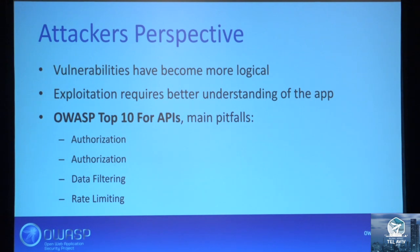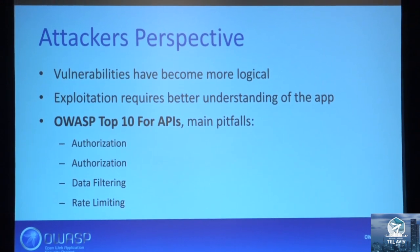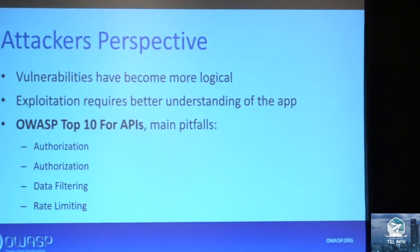All of these changes require a new mindset. If you're a pen tester testing APIs, you need to understand the new battleground and adapt. The OWASP Top 10 for APIs project is trying to define the new battleground of application security — we have a kickoff talk tomorrow around noon, and you're welcome to come and give feedback. The main pitfalls we find today in API security are access control problems, authorization problems, data filtering, and rate limiting. From an attacker's perspective, exploitation requires a better understanding of the app, and vulnerabilities have become more logical.